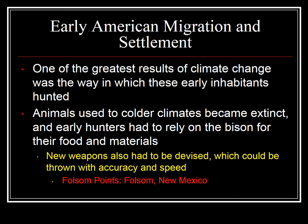New weapons also had to be devised that could be thrown with accuracy and speed. This included the Folsom points, located and named after Folsom, New Mexico, which indicate an even more advanced group of people. The end of the Ice Age radically changed everything — people had to adapt to changing climatic and ecological conditions. One of the ways they did that was by becoming more technologically advanced. Today we think of technology in terms of computers, but more advanced tools are absolutely a form of technology.